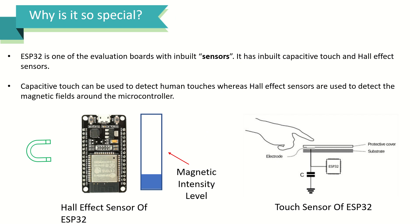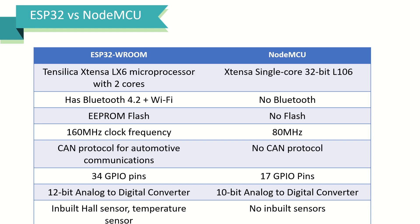ESP32 is one of the evaluation boards with inbuilt sensors. It has inbuilt capacitive touch and hall effect sensors. The capacitive touch sensors are used to detect human touch, whereas the hall effect sensors are used to detect magnetic fields around the microcontroller.